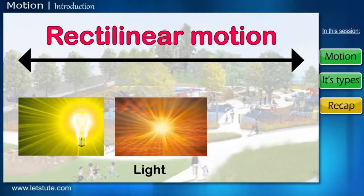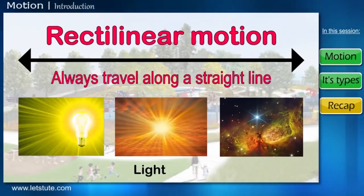Light from the sun, light bulbs, and stars always travels along a straight line, and hence is the best example of rectilinear motion.